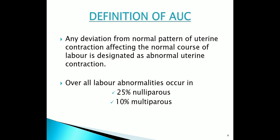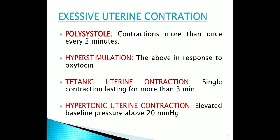Now, come to the definition of abnormal uterine contraction. Any deviation from the normal pattern of uterine contraction affecting the normal course of labor is designated as abnormal uterine contraction. Overall, labor abnormalities occur in 25% of nulliparous and 10% of multiparous. We should know some terms in excessive uterine contraction: polysystole — contraction more than once every 2 minutes; hyperstimulation — the above in response to oxytocin; tetanic uterine contraction — a single contraction lasting more than 3 minutes; hypertonic uterine contraction — elevated baseline pressure above 20 mmHg.